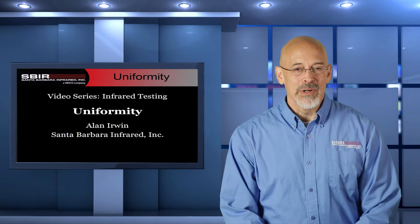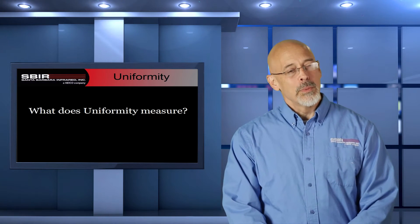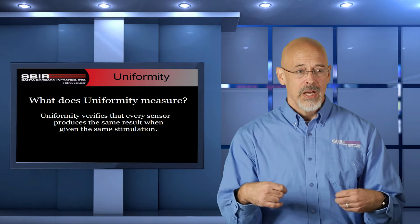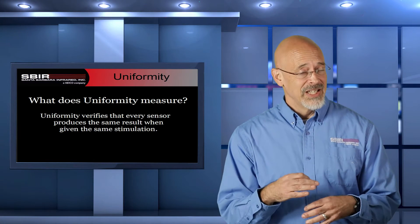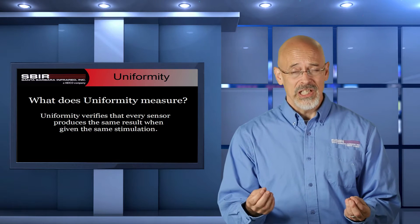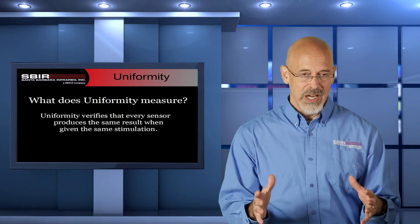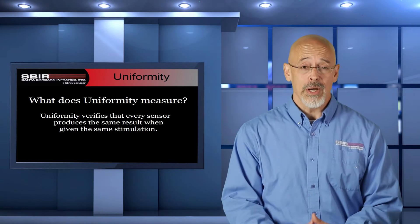Hi, Alan Irwin, Santa Barbara Infrared. In this video we're gathered together to talk about uniformity. So what does uniformity measure? Uniformity verifies that every sensor element in a focal plane array or some bigger sensor produces the same result when given the same stimulation. It sounds very simple, and conceptually it is very simple, but there are a lot of ambiguities that need to be specified to properly do this test — and that's where the trick is when we talk about uniformity.